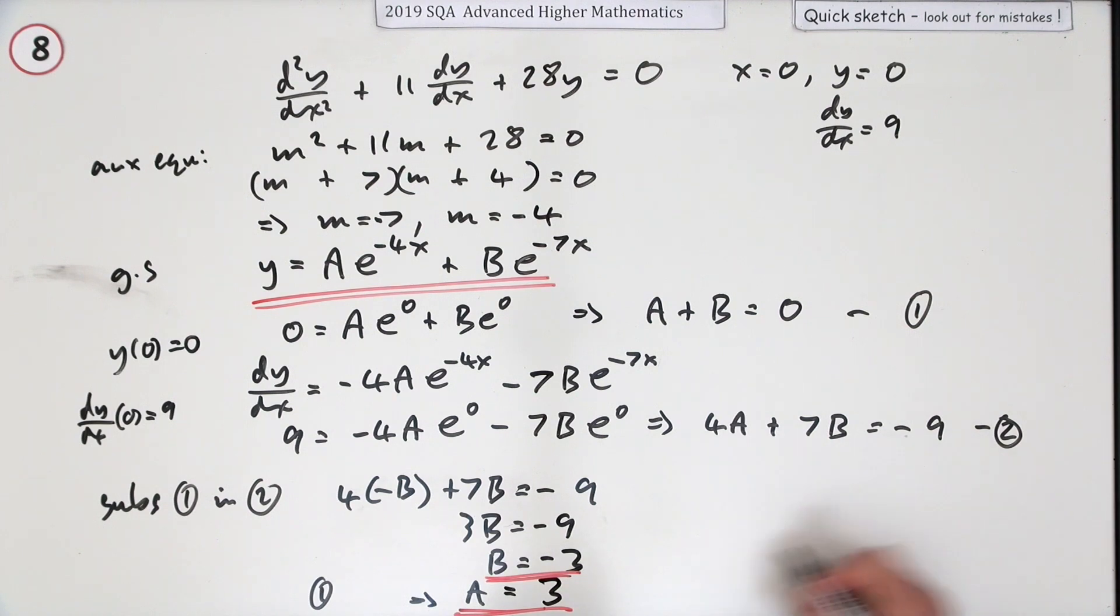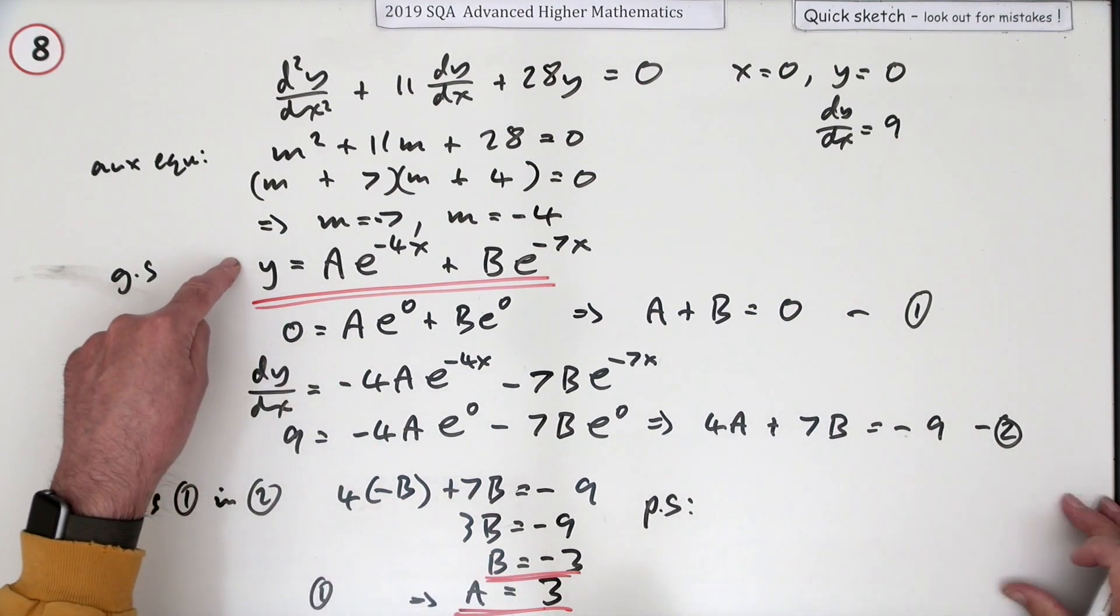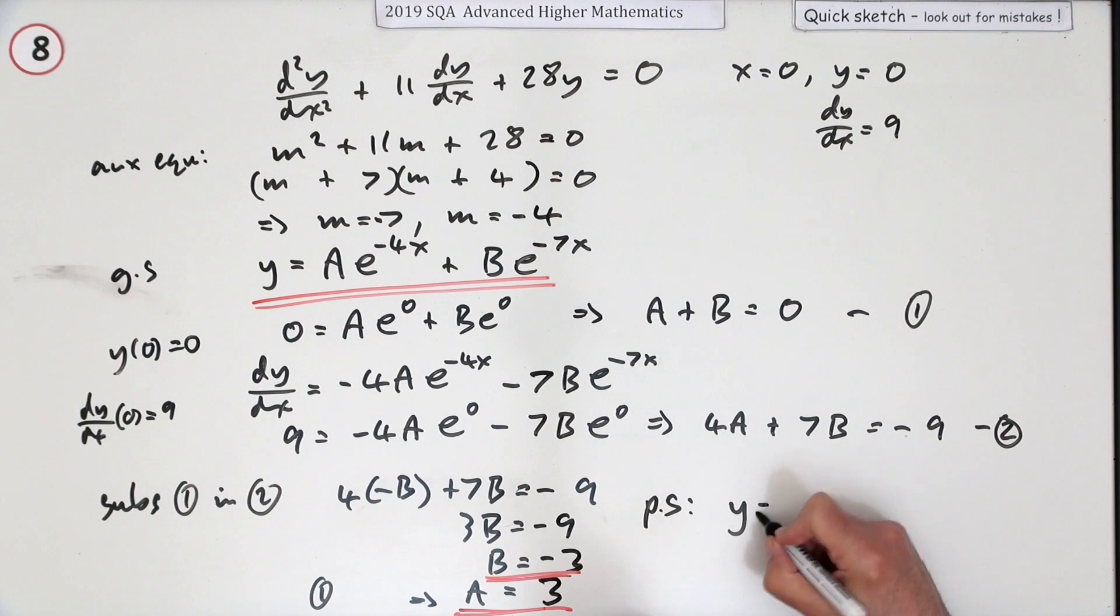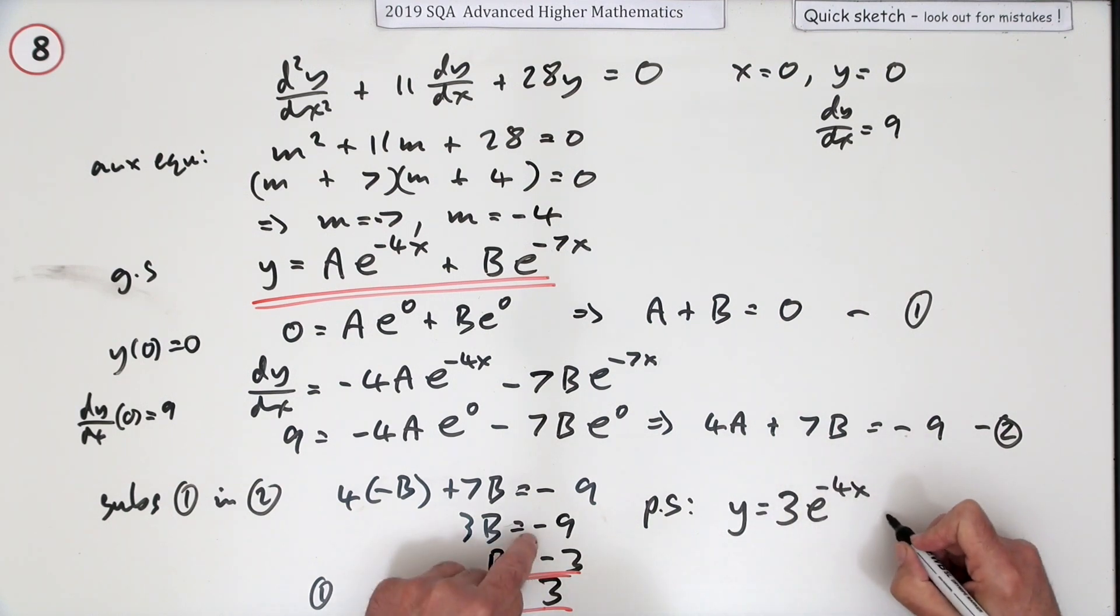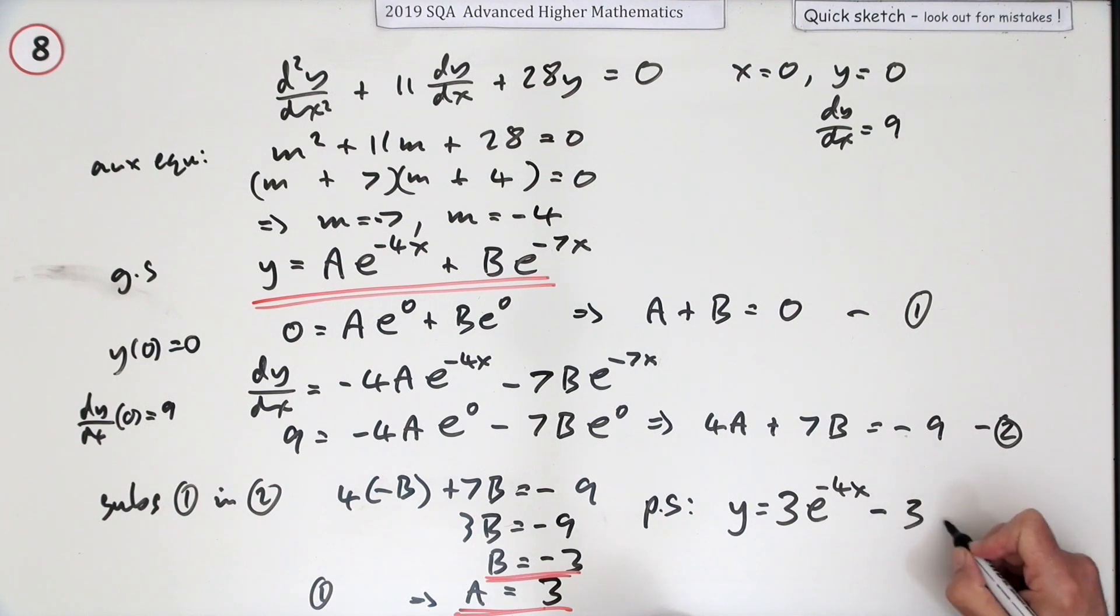It's a bit messy, this, not left enough room for the final answer. It'll just have to go in here, squeezed in. So what is the particular solution? At least there's only two terms so it will fit in here: y = 3e^(-4x) - 3e^(-7x).